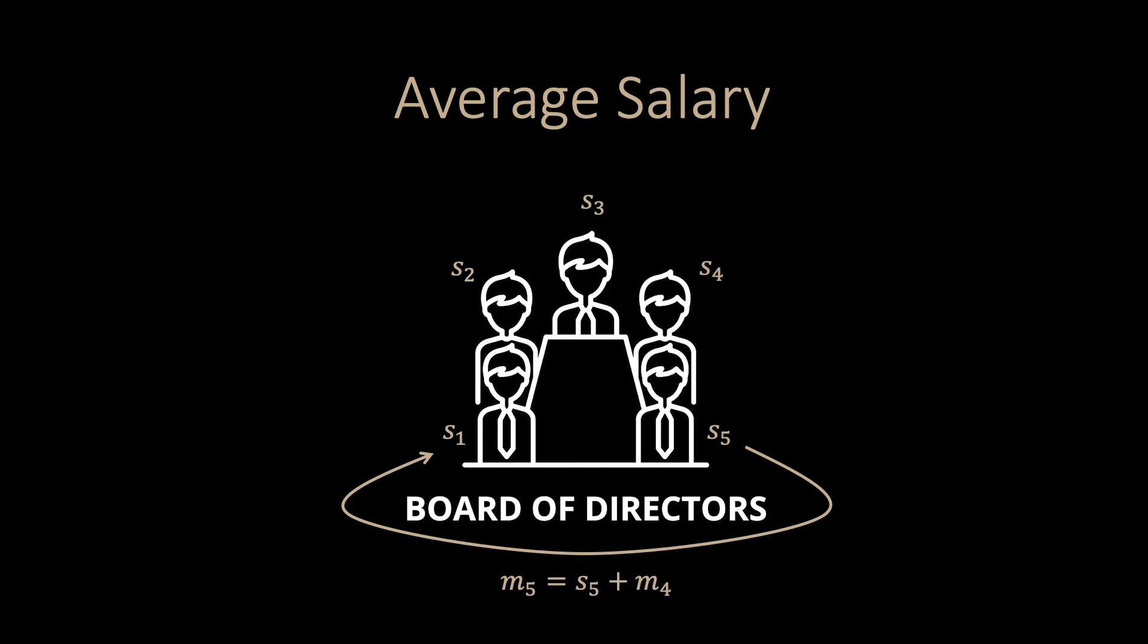Finally, the fifth director adds their salary and sends the sum back to the first director. Now the first director simply subtracts the initial random number and divides by 5 to compute the average salary. The director can then share this result with all directors.